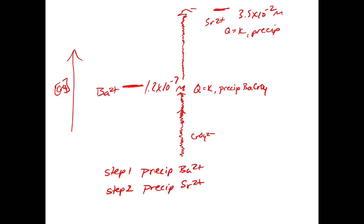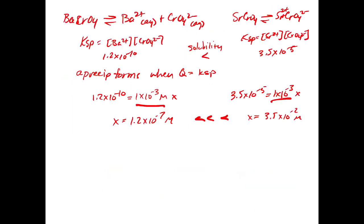This is the main idea behind fractional precipitation, which is what the textbook focuses on. There's another example in the textbook using sulfide, lead, and zinc, where hydrogen sulfide as a weak acid allows you to tune the sulfide concentration to precipitate them out. The key point is that the ion with the lower KSP precipitates first, because it requires the lowest chromate concentration to reach KSP.